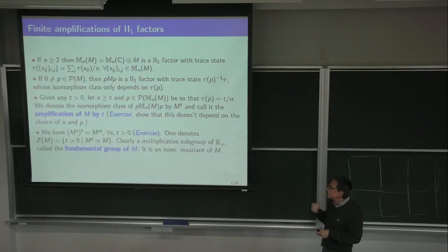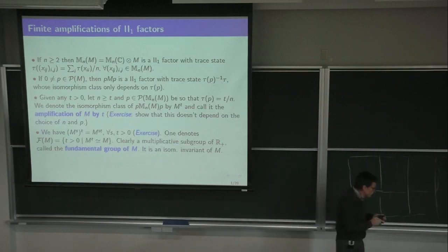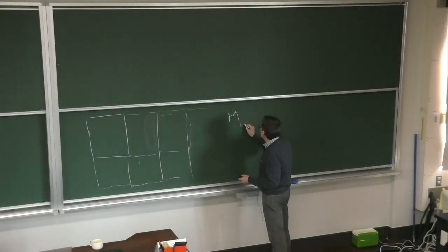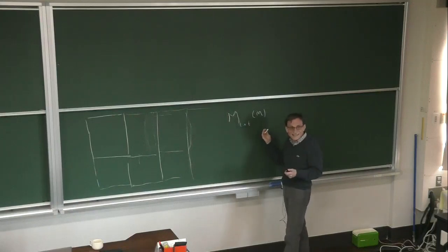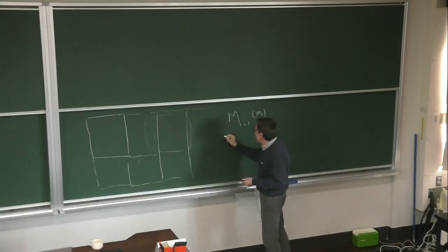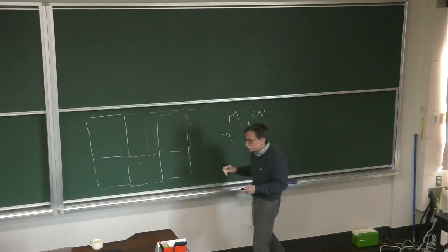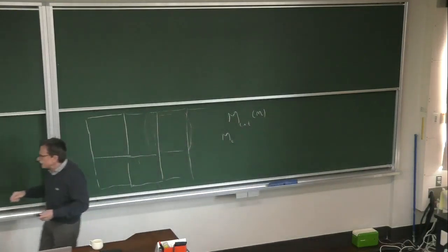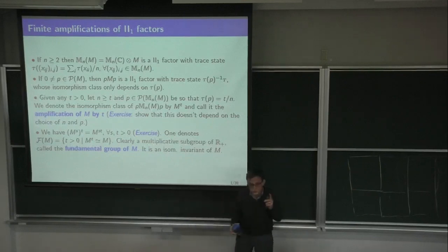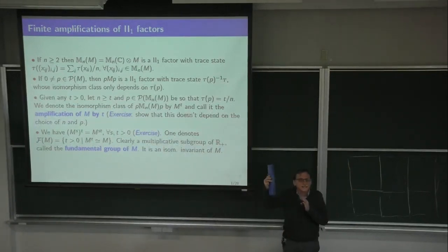However, since then there are two versions; there is also a justification for denoting it like t by t matrices over M. People use this notation because of that. The original notation and the very word 'amplification' means putting it up, when you amplify things.